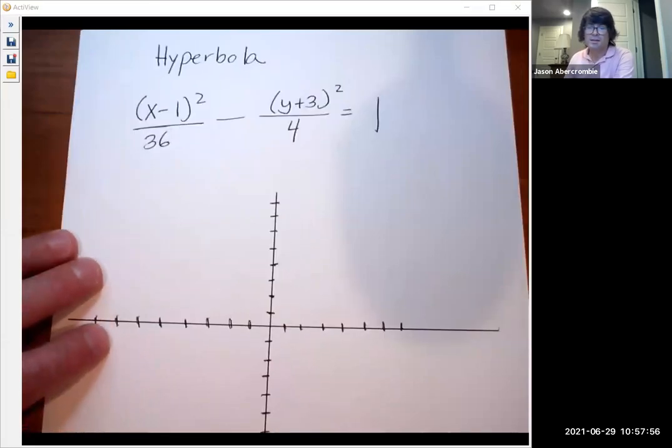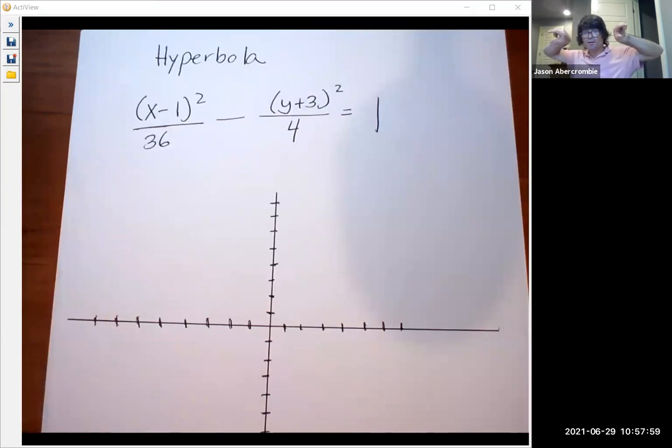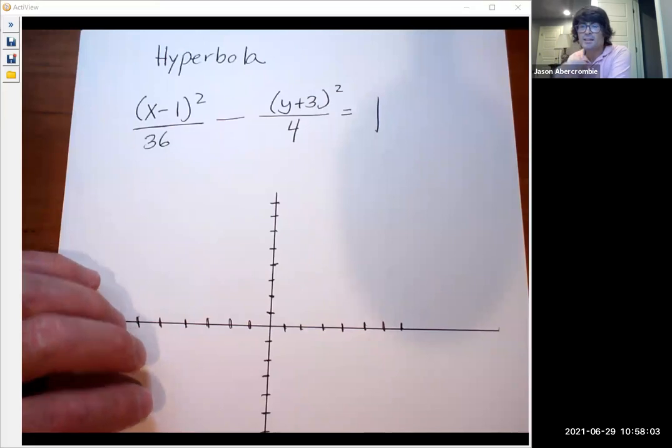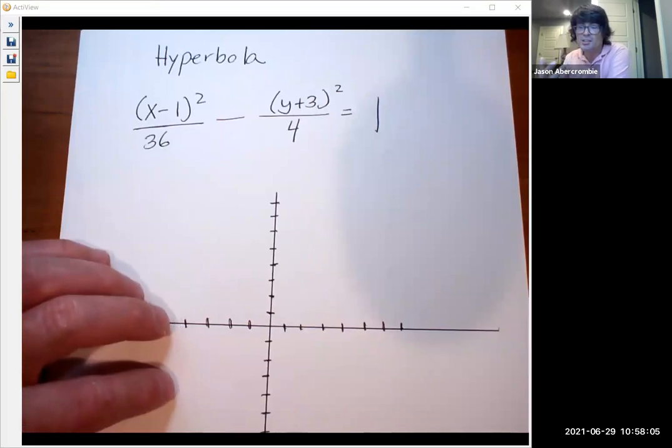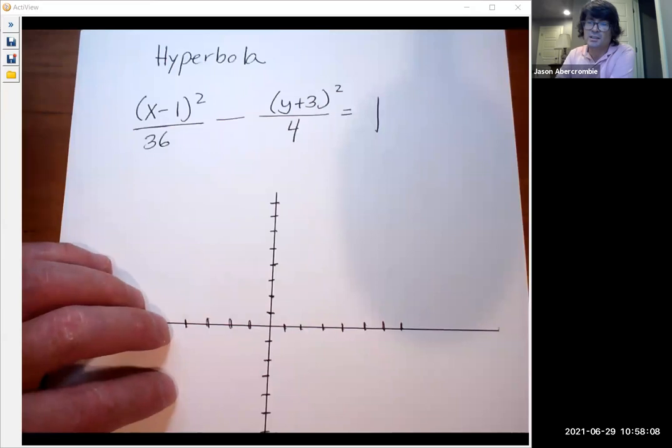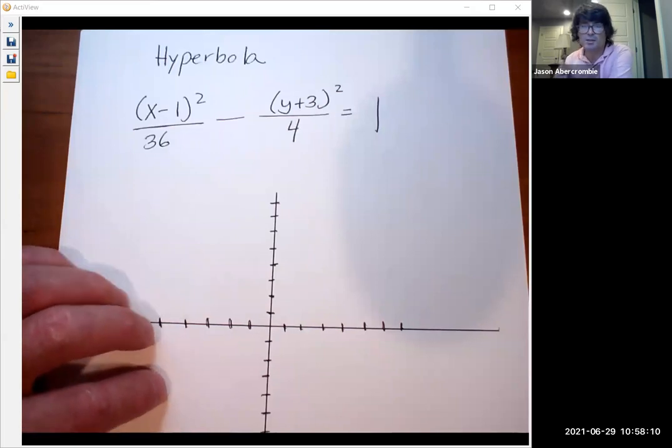A hyperbola is a shape that looks like two little kind of half parabolas that are facing away from each other. To get it right you have to start it in the right position, get the asymptotes right, and then eventually get the focus points right. So let me show you my trick.